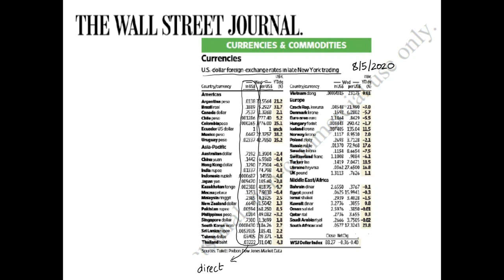The second column, on the other hand, is expressing the price of one unit of US dollars in terms of foreign currencies. For example, one US dollar was equivalent to 1.3904 Australian dollars. So the second column is your indirect quote, since we're talking about the foreign currency price of one US dollar. This assumes you are an American investor. As long as we know the direct quote, we can find the indirect quote and vice versa.